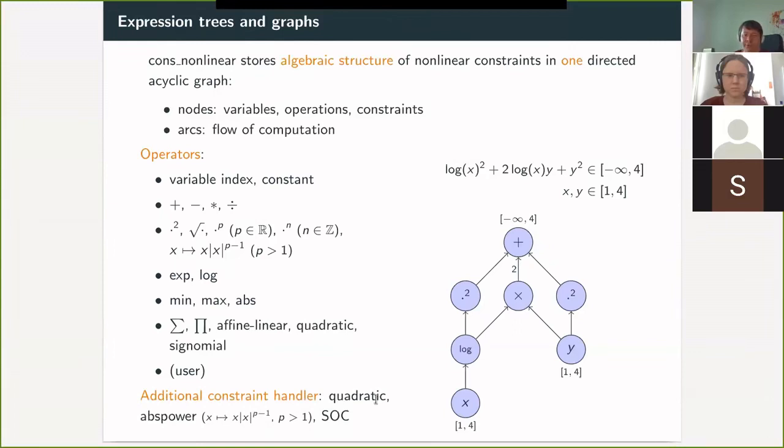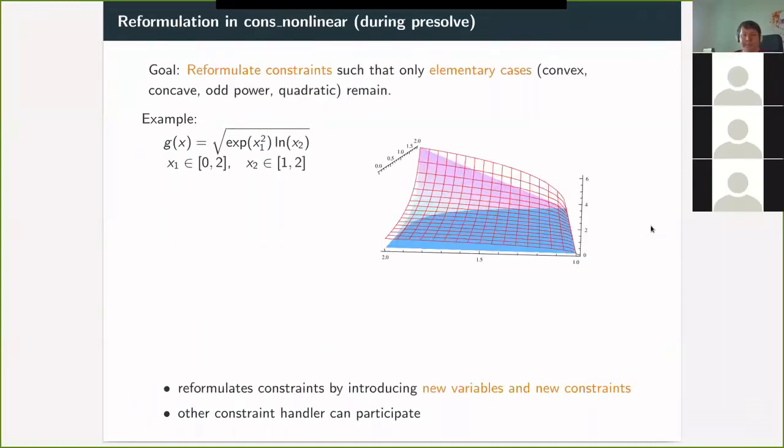And then there are some additional constraint handlers for quadratic constraints. Something very special for this kind of constraints, because they came up in some gas network applications where SCIP was used. And then there's something for second order cones. And what happens then in pre-solve is that if you have a constraint like this one here, SCIP is reformulating this into a simpler or into a larger set of constraints that are of a more simple structure. So everything that you see here, all these are like five constraints that this one constraint is reformulated into with new variables added. And for all of these functions here on the right hand side, they are kind of convex or concave or quadratic. And this is the one that then in the solve, SCIP is working on.